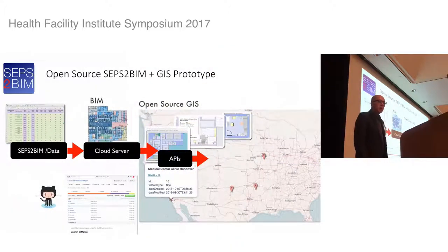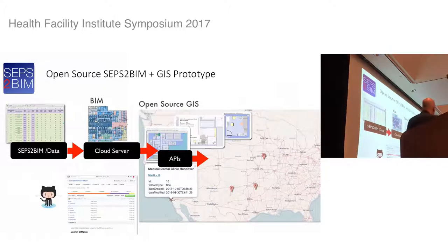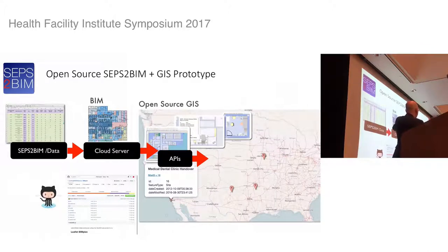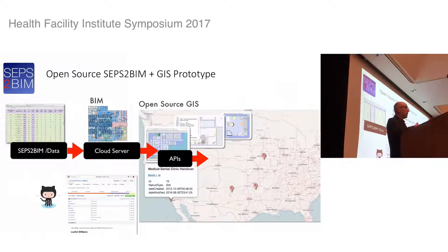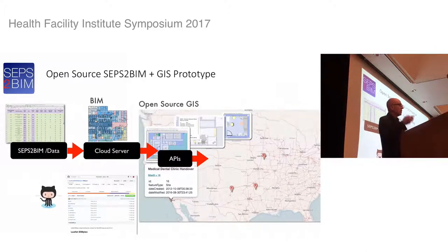The open source community: I'm part of the National Institute of Building Sciences' Building Smart Alliance thought leadership group, and we challenged the group — what can we build with open source tools on top of the SEPS to BIM data? Taking it to the cloud, building APIs, linking to open source GIS tools that show how the portfolio works. This is the beginning of an open source application whose source code is public online — anybody can get it and build functionality on top. Open source is an incredibly important concept, and we have to get that culture into our industry.